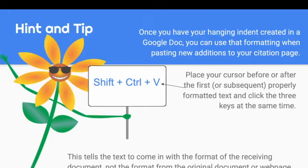Once you have this hanging indent created in a Google Doc, you can use that formatting when pasting new additions to your citation page. Place your cursor before or after the properly formatted text, depending on where it falls alphabetically, and then press Shift, Control, and V at the same time. This tells the text to come in with the format of the receiving document, not from its original document or web page.